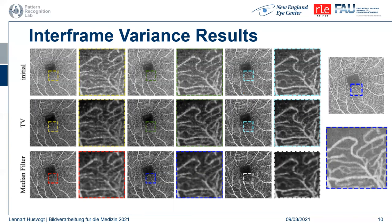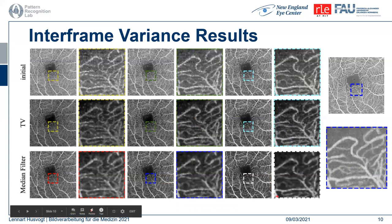Here we see en-face projections for interframe variance reconstructions. The top row shows the original amplitude decorrelation en-face projections. The center row shows the total variation regularized results, and the bottom row shows median filter results for comparison. On the right, we see the en-face projection of the ground truth plus an enlarged area from the same ground truth. Compared to the initial en-face views, we get significantly reduced noise and some of the vessels start to become more apparent. We don't reach the quality of the ground truth, but we can see even very fine capillaries. The median filter tends to blur out very small capillaries, which decreases vascular connectivity.